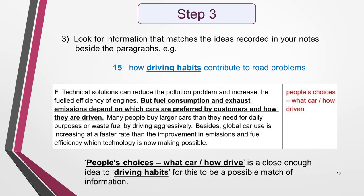Looking at the statements again, there are no names, numbers, places, or dates for a quick start with this particular question. Instead, I read the statements again looking for information matching the ideas in my notes beside the paragraphs. I'm immediately drawn to statement 15 because I remember a paragraph about the choices people make regarding what car they buy and how they drive. I wrote 'people's choice — what car / how drive' beside that paragraph, which is close enough to 'driving habits' in the statement.